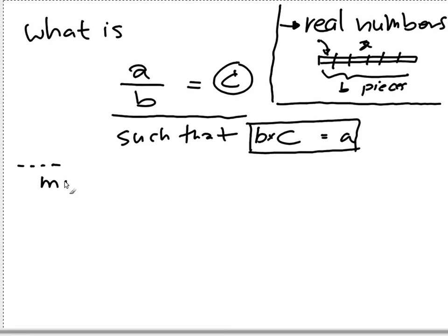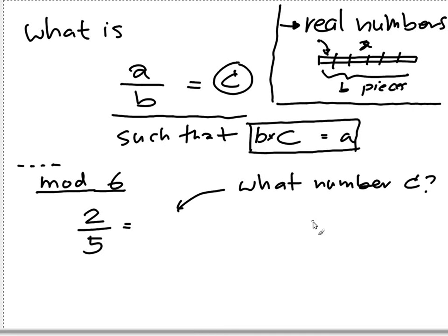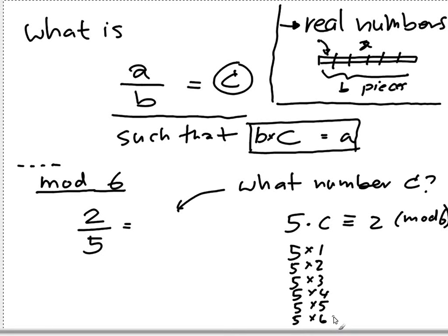Let's look at the example. So, suppose we want to do everything mod 6. If we want to ask, what is 2 divided by 5? We ask the question, what number C such that 5 times C equals 2 mod 6? Let's try to figure it out. Let's try to find 5 times 1, 5 times 2, 5 times 3, 4, and 5 times 6. Everything is going to be mod 6, so this is like 5 times 0, so that makes sense.